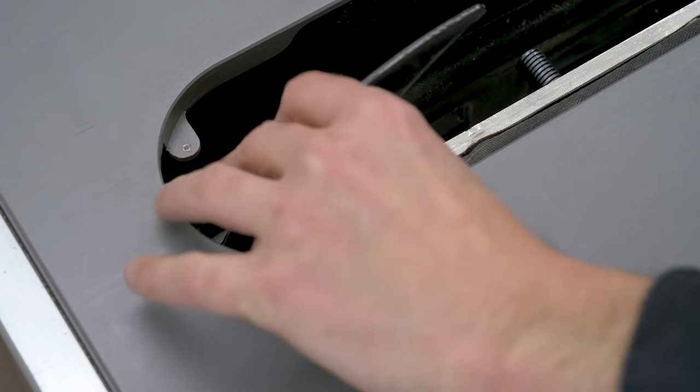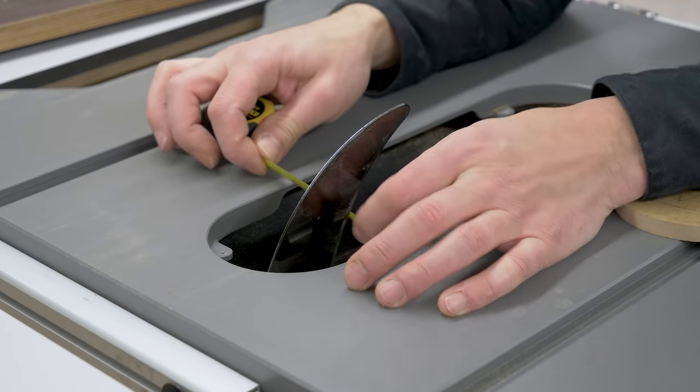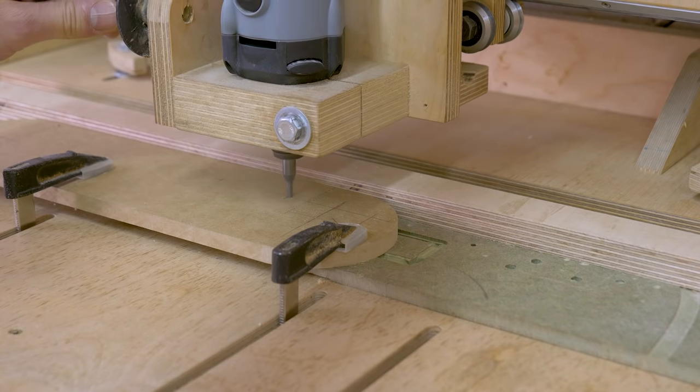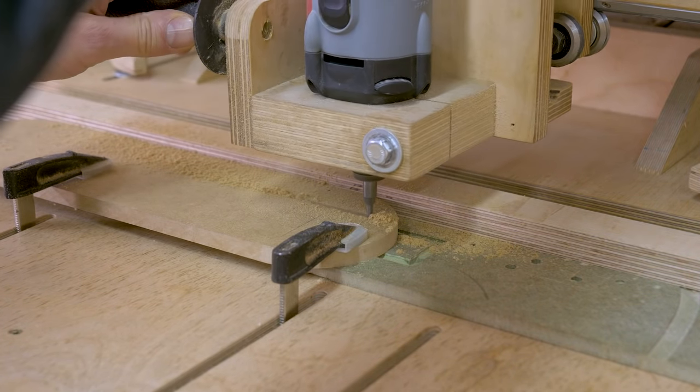Now I'll make the cut that's needed for the riving knife. I work out its position and use my 3D router. We could also use a handheld router and jigs.